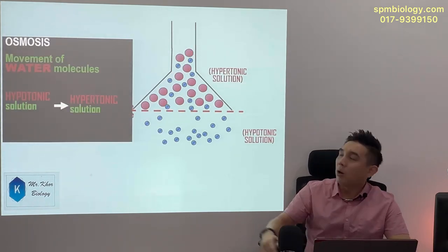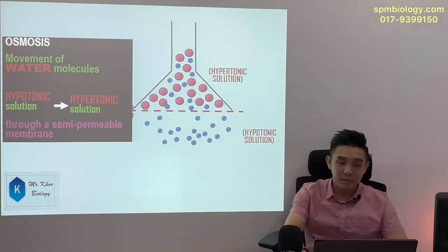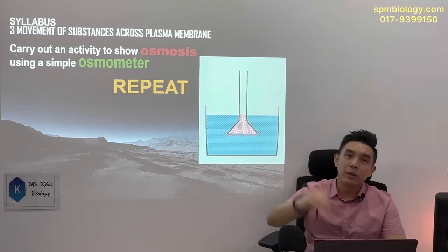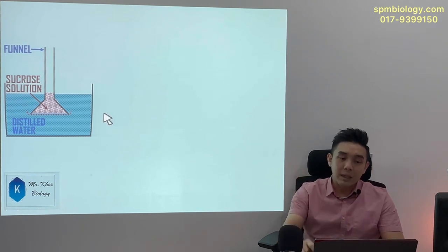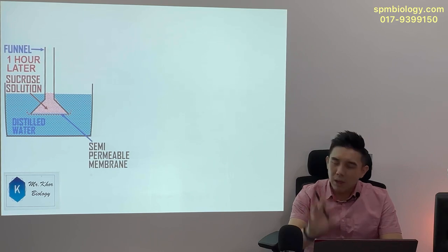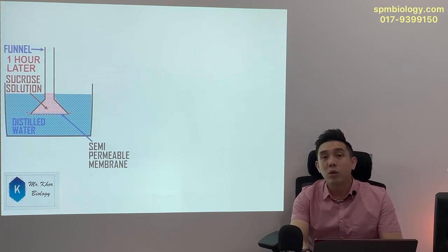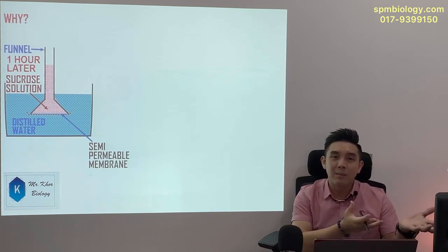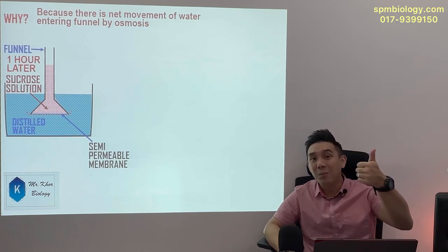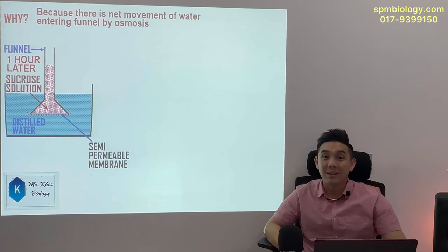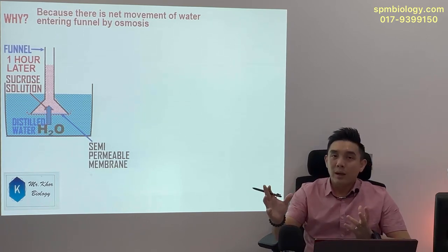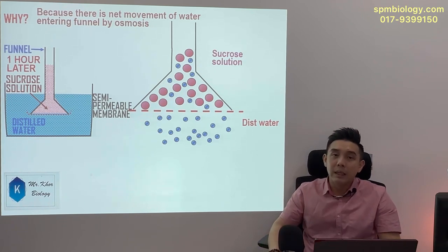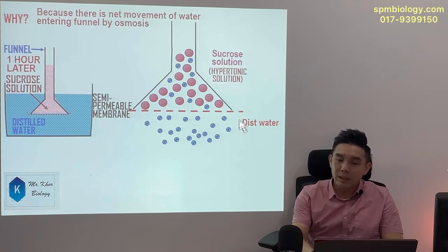Just remember: water always moves from hypo to hyper. I'll repeat the whole thing again but more quickly. I set up this osmometer and set it aside for one hour. One hour later, the level would have increased. The exam asks why — and the answer is: there is net movement of water entering the funnel by osmosis. For osmosis, always determine hypo or hyper first: sucrose solution is hyper, distilled water is hypo.